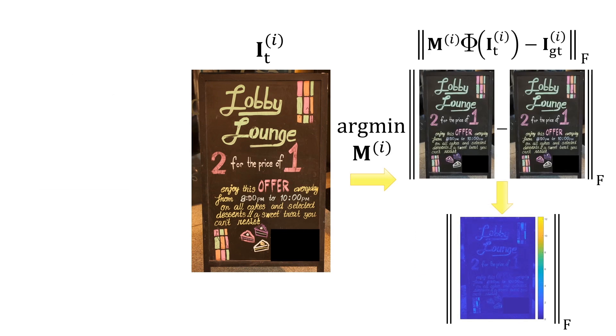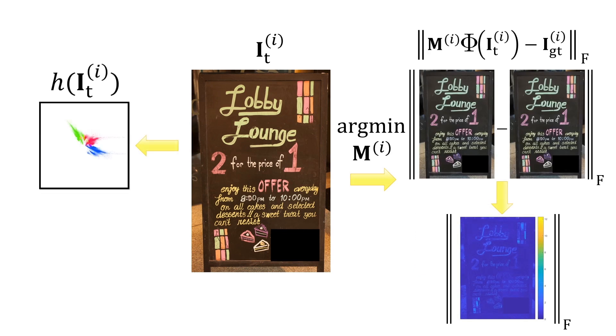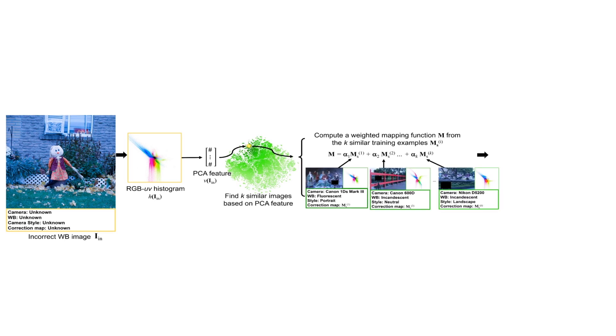We also generate a histogram feature to represent the training image. This feature is further reduced through PCA. We do this for a lot of images — over 60,000. Given a new input image, we generate its histogram feature's PCA representation. We then find the most similar training images based on these PCA features. A color correction for our input image can be obtained by a simple weighted blending of the color mapping functions of the similar training images.